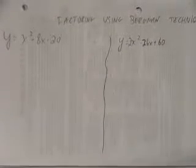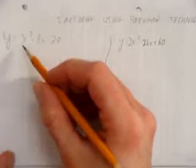Let's try factoring these quadratic equations using Bergman Technique. This first equation is y equals x squared minus 8x minus 20.